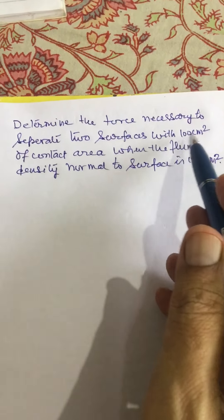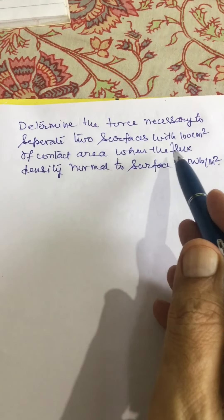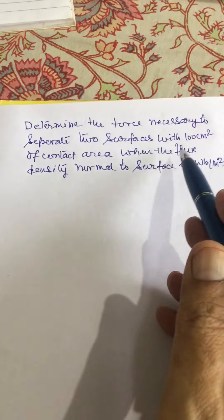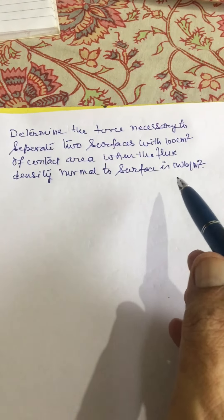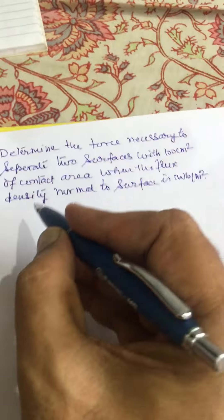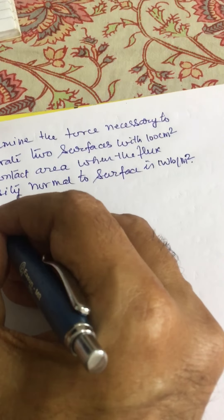Determine the force necessary to separate two surfaces with 100 centimeter square of contact area when the flux density normal to the surface is 1 weber per meter square. So we can solve this problem as given below.